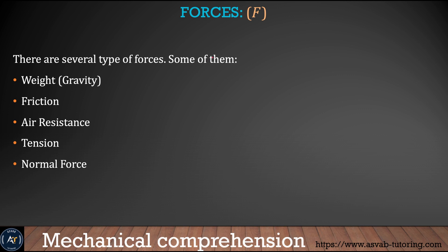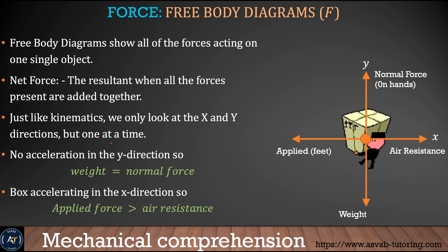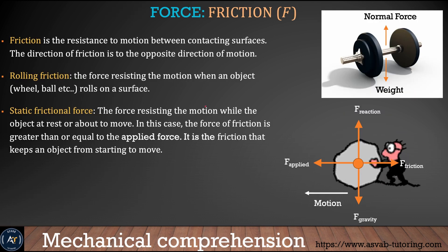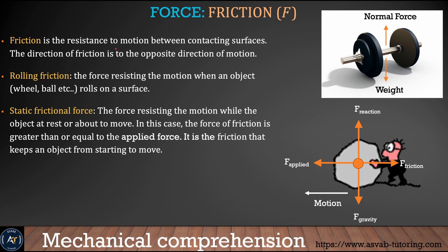There are different types of forces: weight (which is gravity), friction, air resistance, tension, and normal forces. Say this person is walking with an object — the normal force is acting upward, weight is acting downward. The person is moving forward, so air resistance is acting in the opposite direction. You can also see friction acting here.